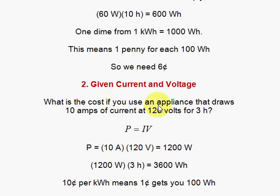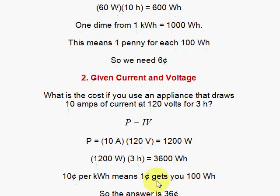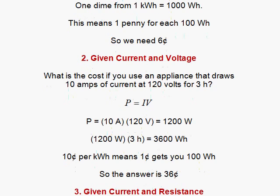What is the cost if you use an appliance that draws 10 amps of current at 120 volts for three hours. So now I have to work to get the watts to figure it out. The power is I times V. I have 10 amps times 120 volts, I get 1200 watts. And then I bring in the time because now I know that this is telling me what to do. Everything is now the same as the previous analysis. Kilowatt hours. I need to take my watts and my hours and multiply them. 3600 watt hours. Then it's one cent for each hundred watt hour. That's told to me by this 10 cents per kilowatt hour. I have thirty six hundred. So the answer is 36 cents.